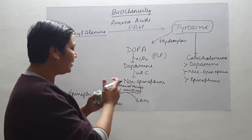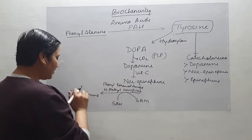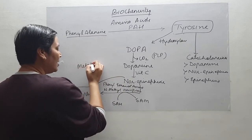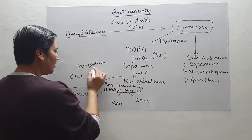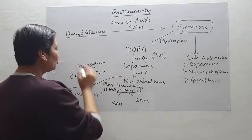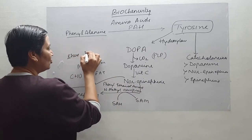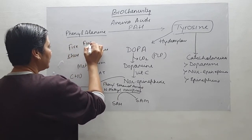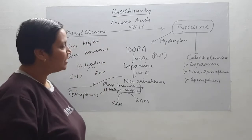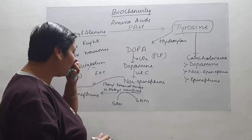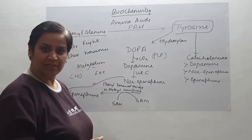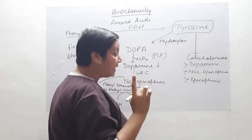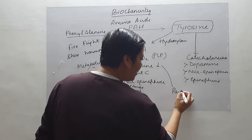Norepinephrine and epinephrine play a very important role in metabolism, whether of carbohydrates or fats. They are known as stress hormones as they are released in stress, also known as fight-or-flight hormones. Regarding inborn errors of metabolism related to this pathway, decreased synthesis of dopamine leads to Parkinson's disease, mostly found in adults.